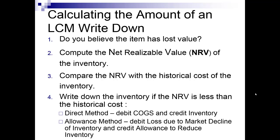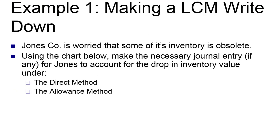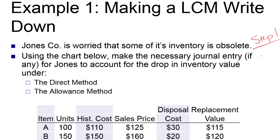Let's take a look at an example of this lower of cost or market adjustment. Jones Company is worried that some of their inventory is obsolete. So that takes care of step one. We think that we've got some obsolete inventory, and remember, that was that key step. If you don't believe that, then nothing else matters.